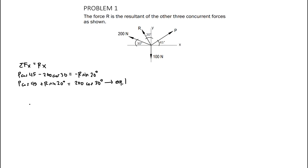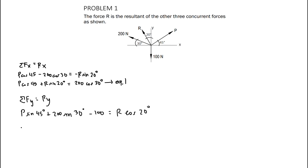For the second equation, we do the same thing for the vertical component. The summation of vertical forces equals R sub y, so P sine 45 degrees plus 200 sine 30 degrees minus 100 is equal to R cosine 20 degrees. Rearranging, we get P sine 45 degrees minus R cosine 20 degrees is equal to 100 minus 200 sine 30 degrees. That serves as our second equation.